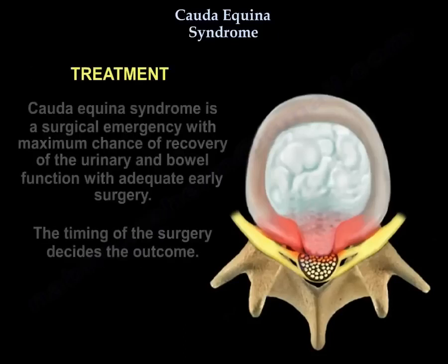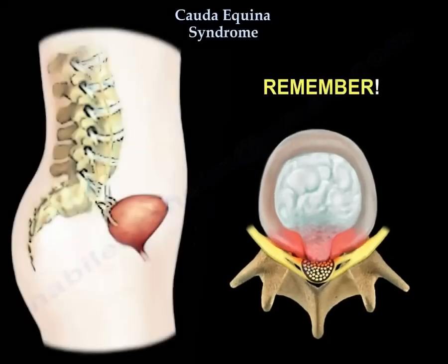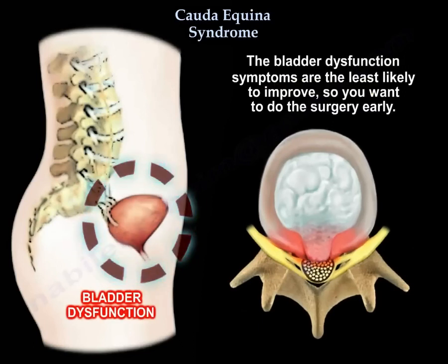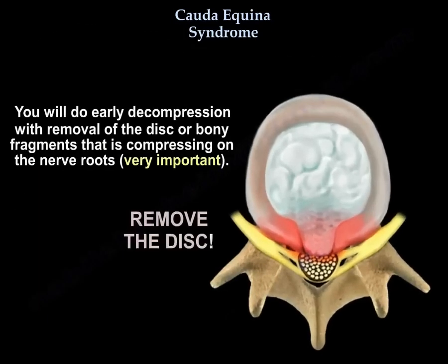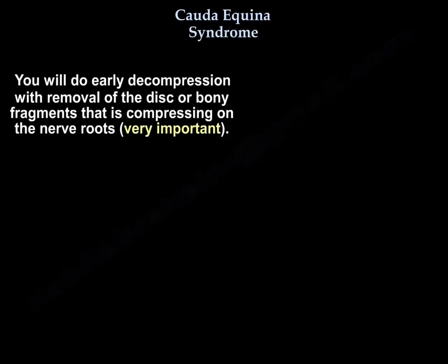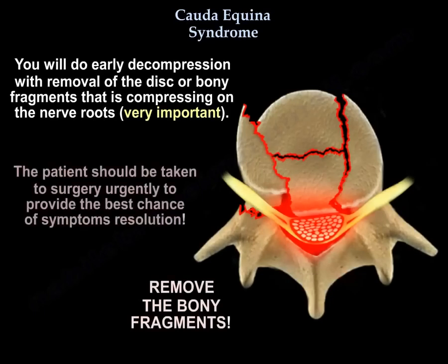Treatment is a surgical emergency, with the maximum chance of recovery of urinary and bowel function with adequate early surgery. Timing of surgery decides the outcome. Bladder dysfunction symptoms are the least likely to improve, so you want to do the surgery early. You will do early decompression with removal of the disc or bony fragments compressing the nerve roots. The patient should be taken to surgery urgently to provide the best chance of symptom resolution.